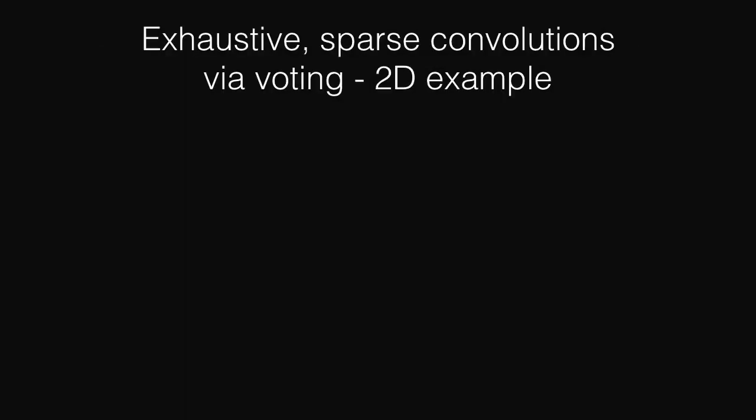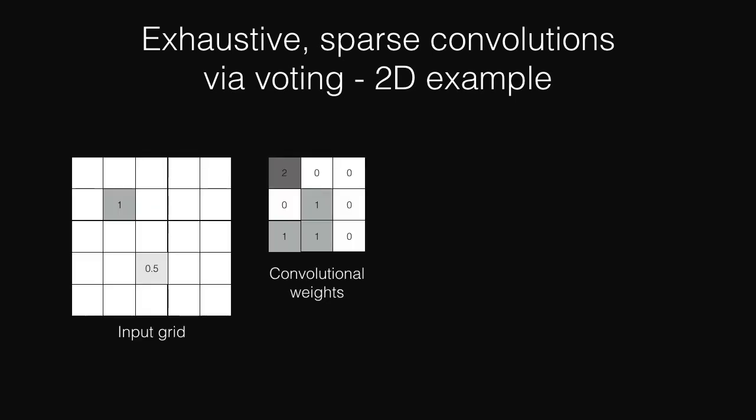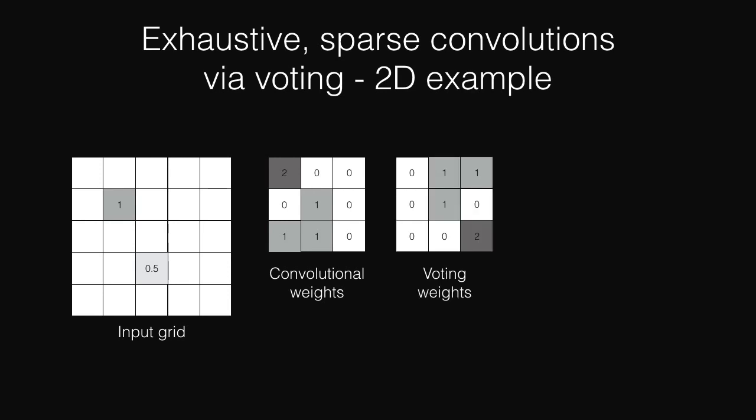The key insight is that a convolution can be reformulated as a voting operation. Here we show a small example in 2D with a sparse input grid. After flipping the convolutional weights of the filter along each spatial dimension, the resulting voting weights only need to be applied to non-empty input cells.